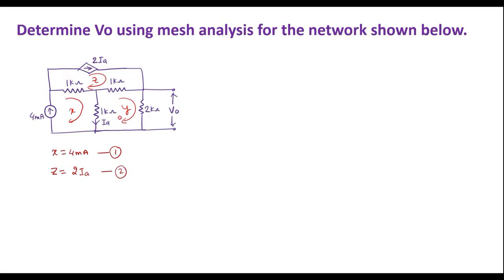Now we have loop Y, where we need to apply KVL to find Y. Since we already obtained X and Z directly, we only need to apply KVL to loop Y. Applying KVL to loop Y: since there are no voltage sources in this loop, the sum equals 0.